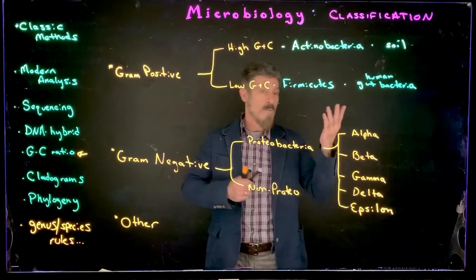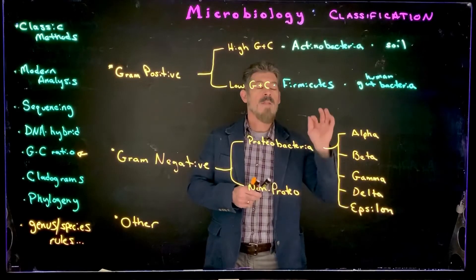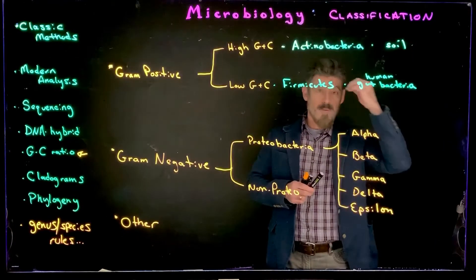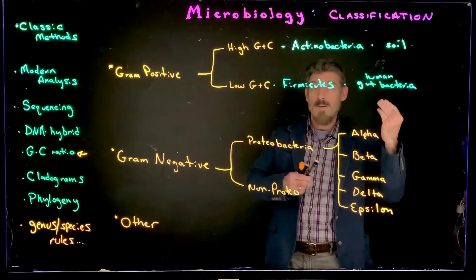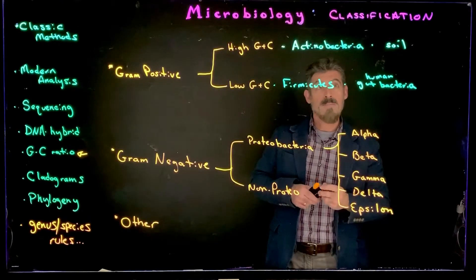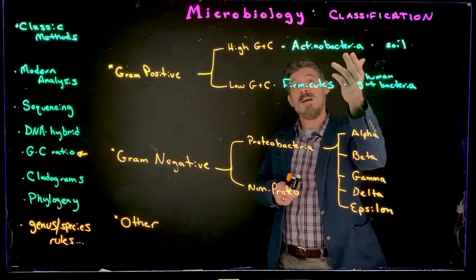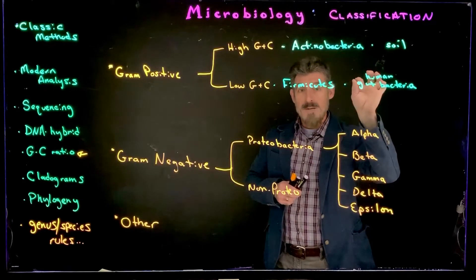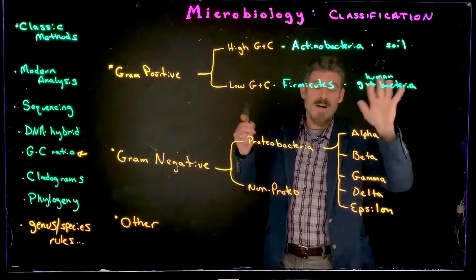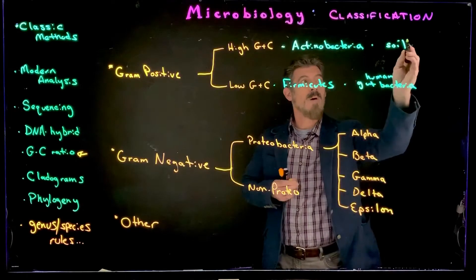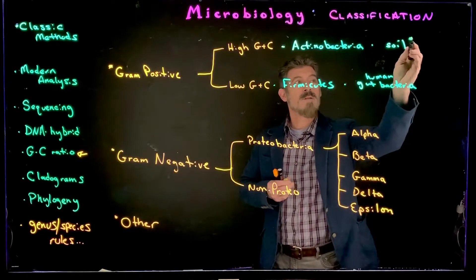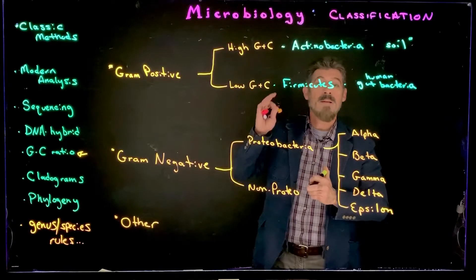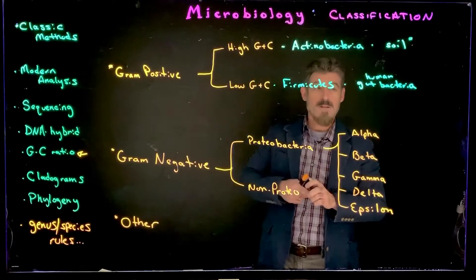Both cocci and bacilli are found in both groups, so they're not divided one way or the other by morphology. The main thing to know is that Actinobacteria are a group of gram-positive bacteria found in many places — not exclusively, but a lot of them are found in soils — and they tend to have high GC content.